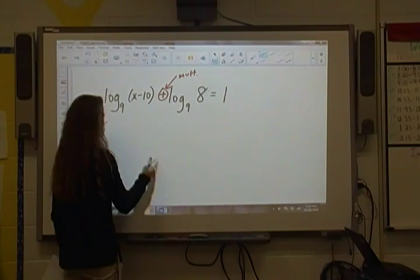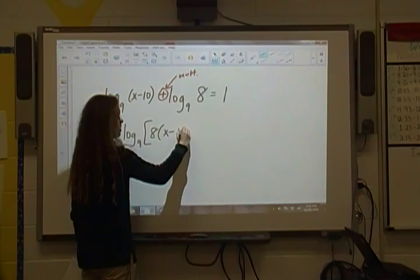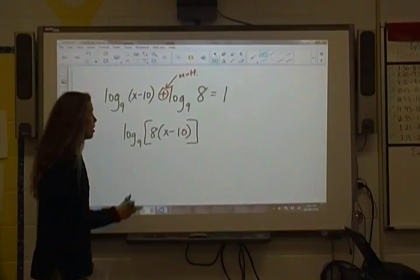So if we multiply these together, we've got log base 9. It only works if the bases are the same, and they are. And then I'm going to put the 8 first just because I prefer to put that first. So 8 times x minus 10. We just took what was our resulting pieces, our x minus 10, our 8, and multiplied them together. Set that equal to 1.